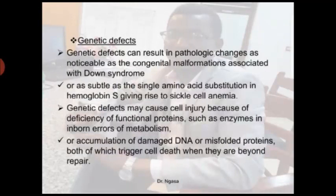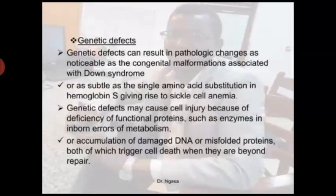Genetic defects are another cause of cell injury and can result in pathological changes. Examples include congenital malformations like Down syndrome, or a single amino acid substitution like in hemoglobin S, which gives rise to sickle cell anemia. Genetic defects may cause cell injury due to deficiencies of functional proteins such as enzymes in inborn errors of metabolism, or accumulation of damaged DNA or misfolded proteins, both of which trigger cell death when they are beyond repair.